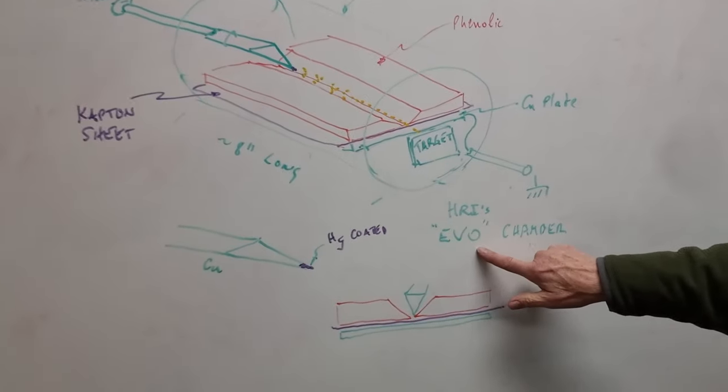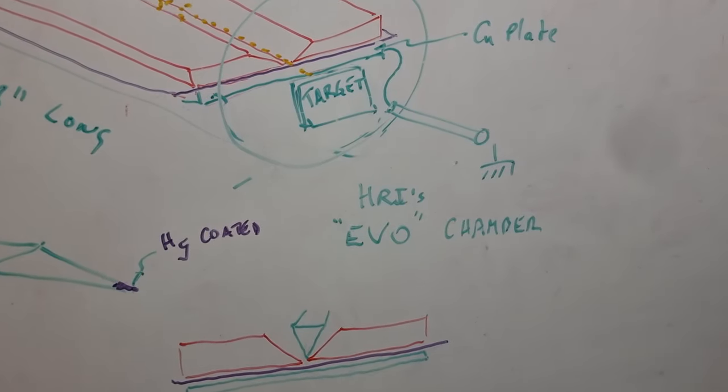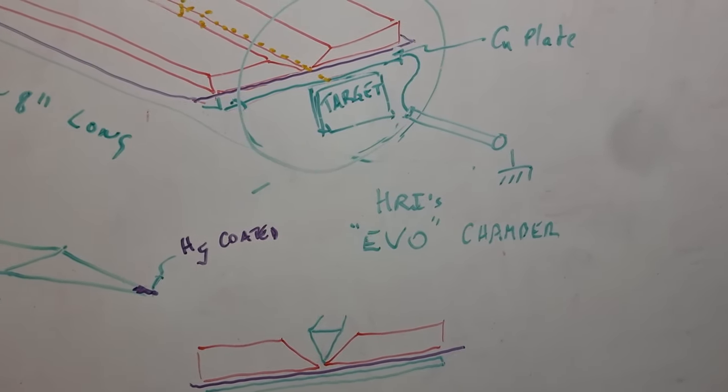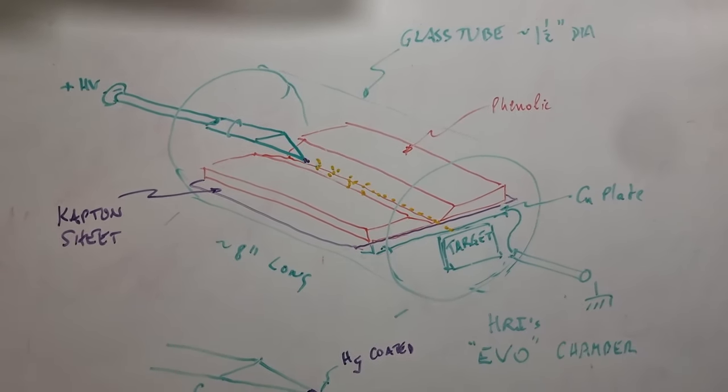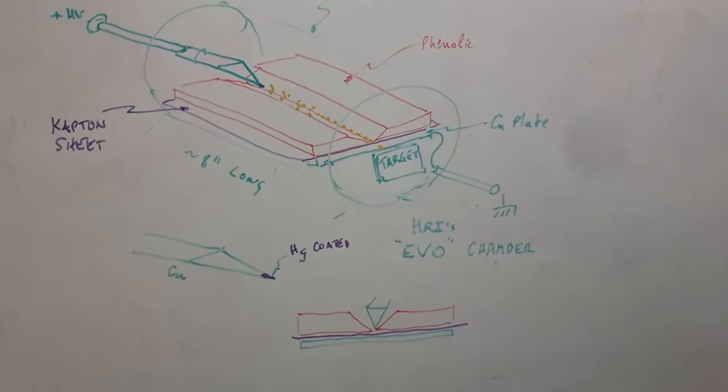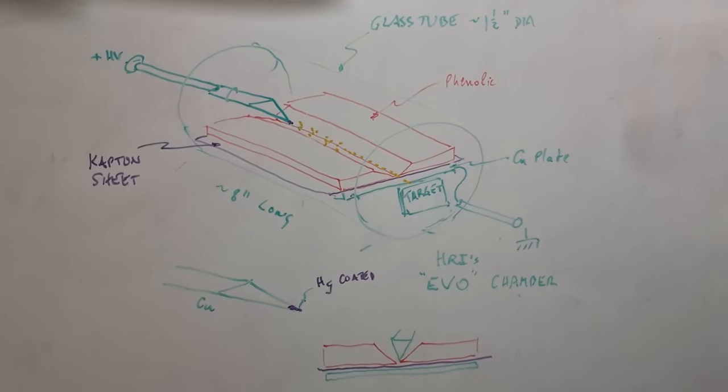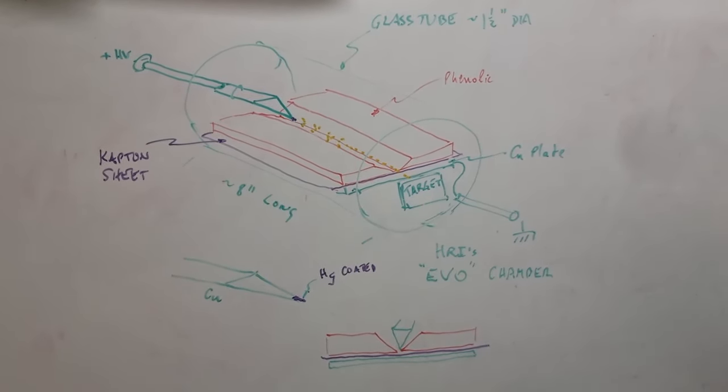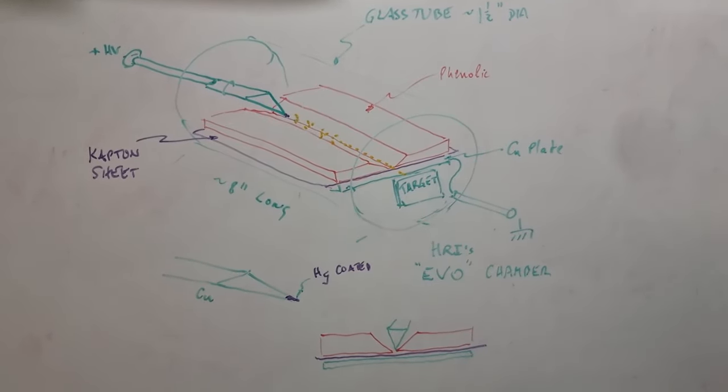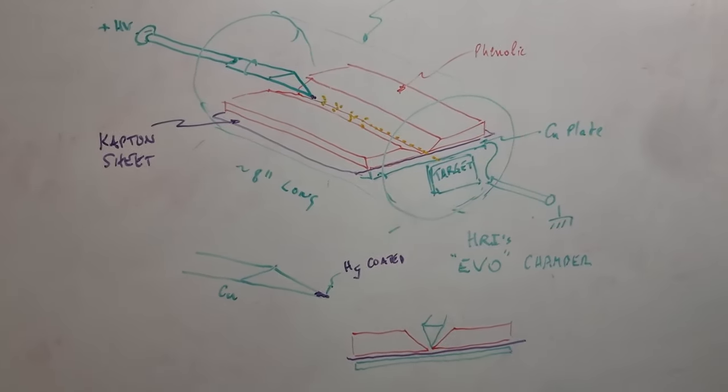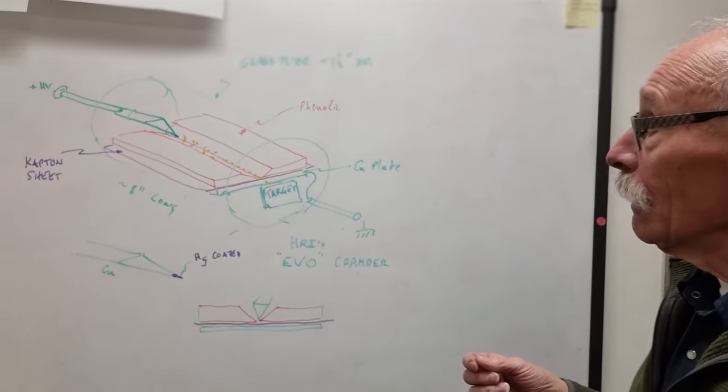This is Hathaway Research's EVO chamber that we designed in conjunction with Ken Shoulders many years ago and used here at the lab as well as at Hal Puthoff's Austin Laboratory, where Scott Little at Hal's lab was doing considerable work trying to show whether there was an energetic increase somehow in what Ken was trying to do.